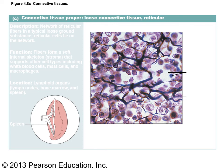Reticular connective tissue is the third type of loose connective tissue. It's made up of reticular fibers that form a net-like matrix, which allows living cells to move around and come and go. You find reticular tissue in the spleen, lymph nodes, and bone marrow — organs that serve as reservoirs for immune cells or stem cells to produce blood cells.